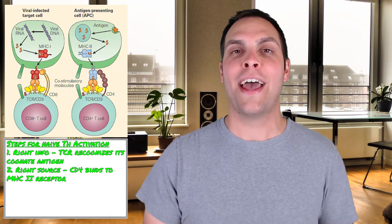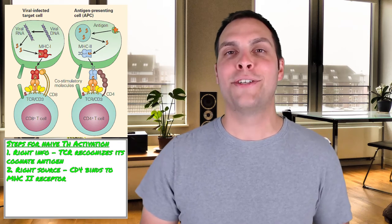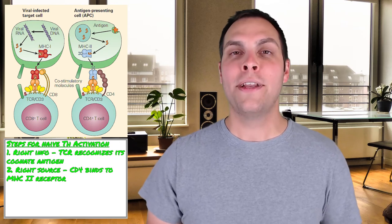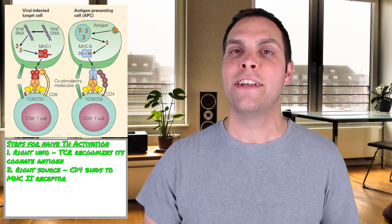So step one: right information — the cognate antigen needs to be recognized by the T cell receptor. Step two: that information is coming from the right source — the CD4 receptor recognizes that that antigen is being presented in an MHC 2 receptor, confirming it's coming from an antigen presenting cell. Helper T cells are only supposed to be activated by what that cell has eaten, not what that cell is making.